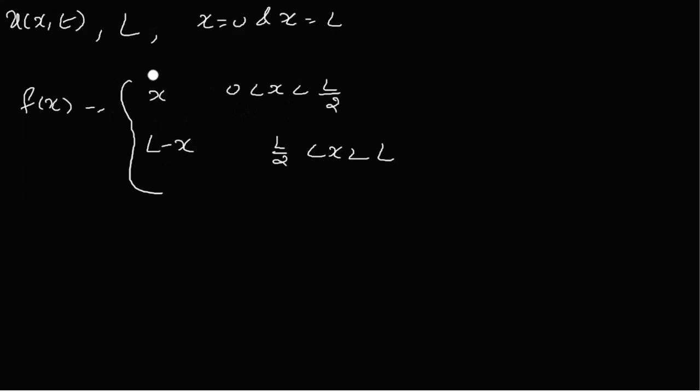From 0 to L/2 the temperature is x, and from L/2 to L the temperature is L minus x. The two ends of the bar are at 0 degrees.